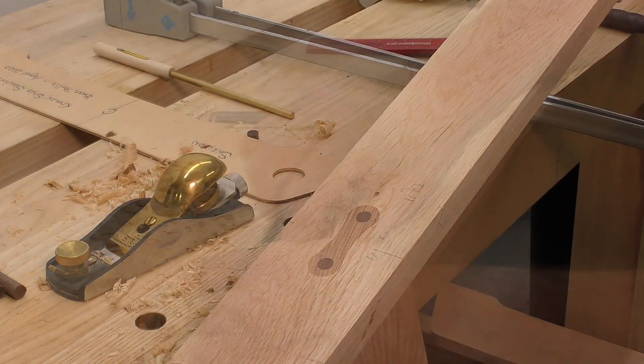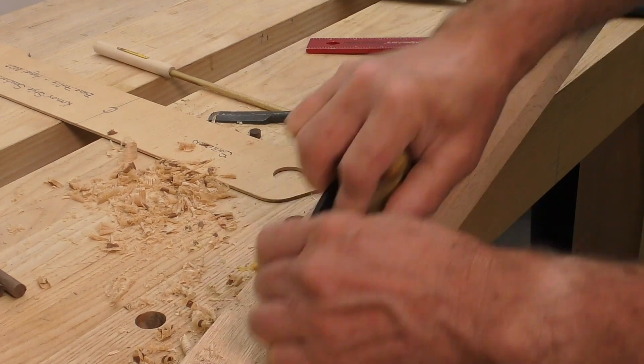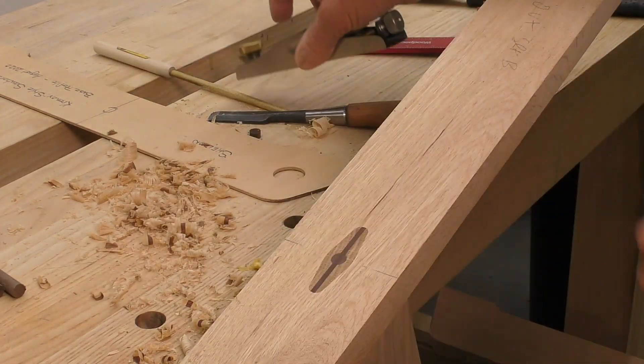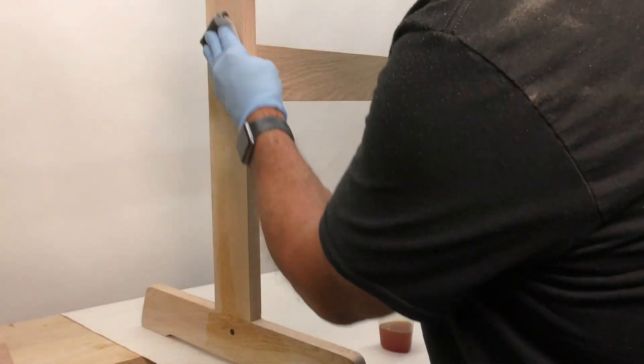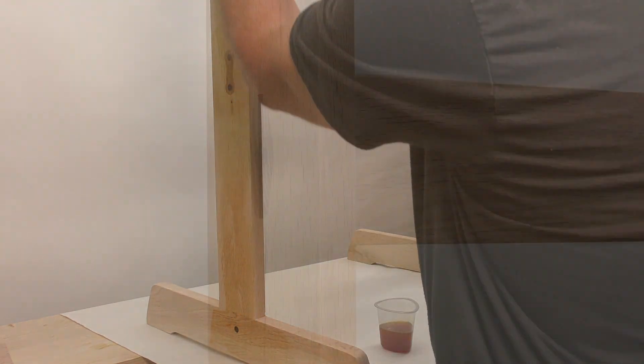A hand plane and lots of sanding to 220 prepare these for the tongue oil finish. Use your imagination, and we'd love to see how you incorporate these new templates into your own work.